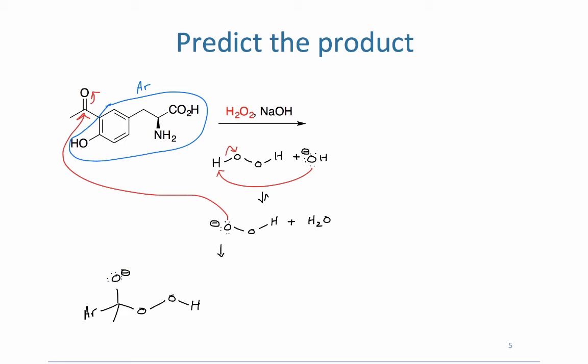Now we have to decide which group is going to migrate best. We have an aryl group, which is comparable to the phenyl ring in the previous slide, versus a methyl, which is primary. So the more substituted aryl group will migrate most easily.